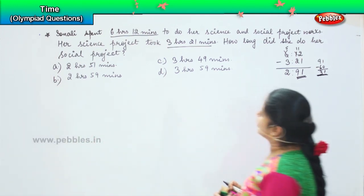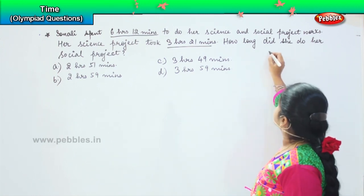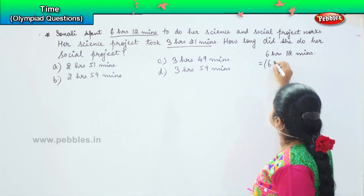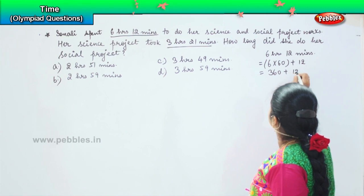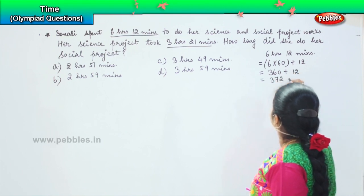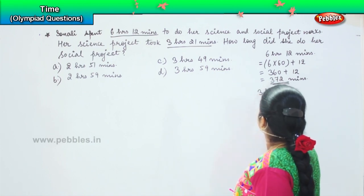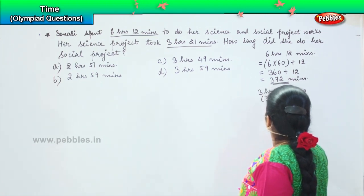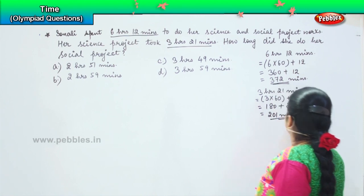Or else we can do one more thing — we can convert it first to avoid confusion. Six hours and twelve minutes can also be written as six times sixty plus twelve, which is three hundred and sixty plus twelve, that is three hundred and seventy-two minutes. Similarly, three hours and twenty-one minutes is three times sixty plus twenty-one, which is one hundred and eighty plus twenty-one, equal to two hundred and one minutes.